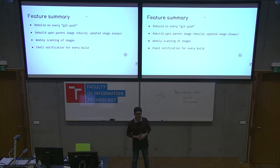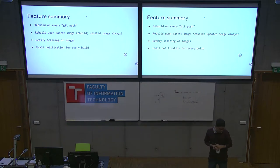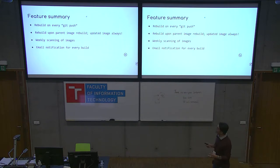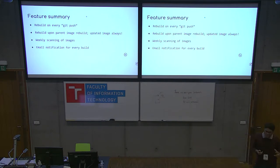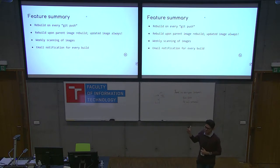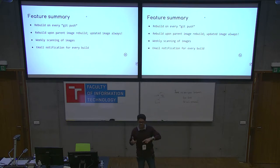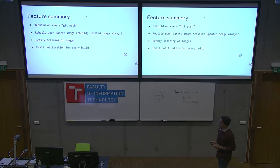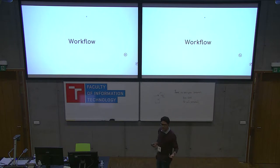A quick summary of features: we rebuild every container image whenever there is a git push to the corresponding repository. We rebuild container images upon parent image rebuild as well. Weekly scanning of images — the various scanners like RPM update, PIP, NPM, GEM, container capabilities, and RPM verification — we do that on a weekly basis. Every Saturday night, a job runs, scans all container images, and sends out an email to every user. Email notifications are sent for every build as well as every weekly scan.